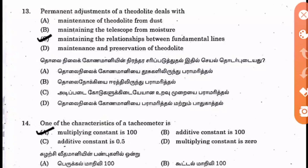Question 14: One of the characteristics of a tachyometer is that the multiplying constant is 100 and the additive constant is 0. Option A is correct.